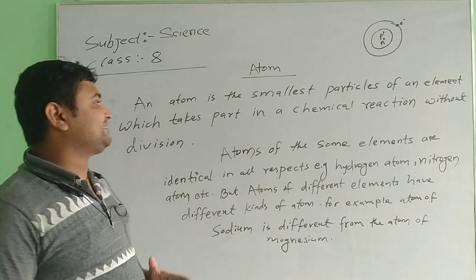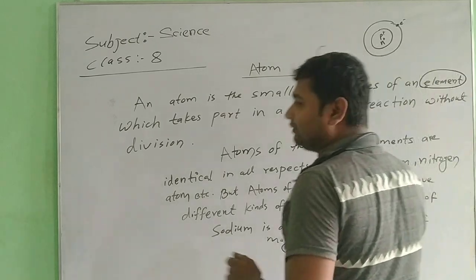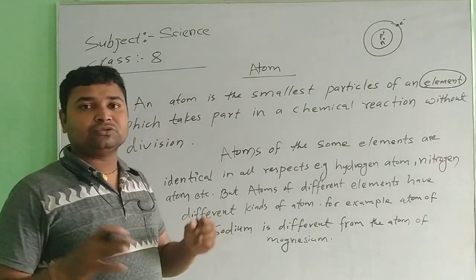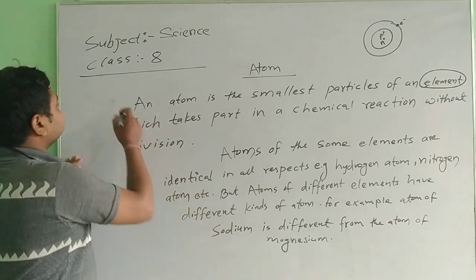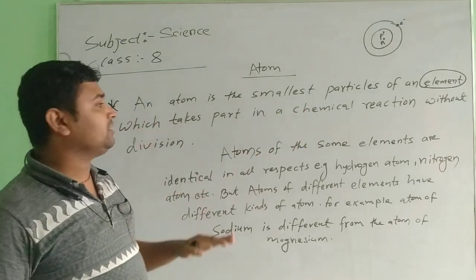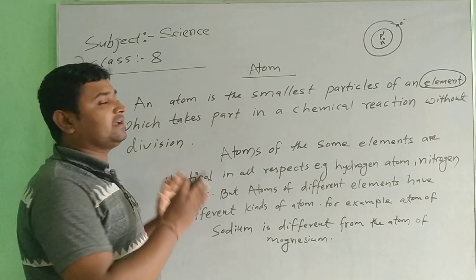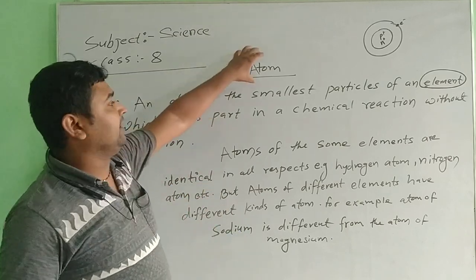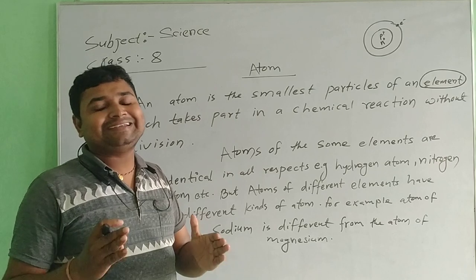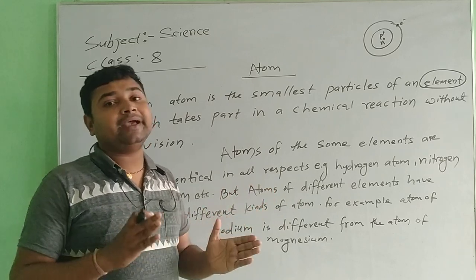Today let's talk about the atom. What is an atom? Atom is the smallest particle of an element. What is an element? An element is a substance that cannot be broken down into other substances. Atom is the smallest particle of an element which can take part in a chemical reaction without division — that means without any division, they can take part in chemical reactions.